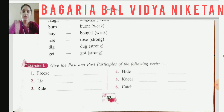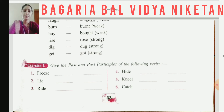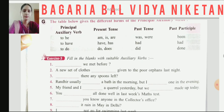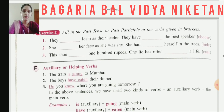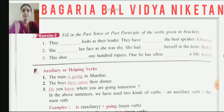The first exercise is: give the past and past participles of the following verbs. You need to write the second and third forms of: freeze, lie, ride, hide, kneel, and catch. The basic verb — which is the present form — is given, and you need to fill in the second and third forms. Do this in the book only, no need to write in the notebook.